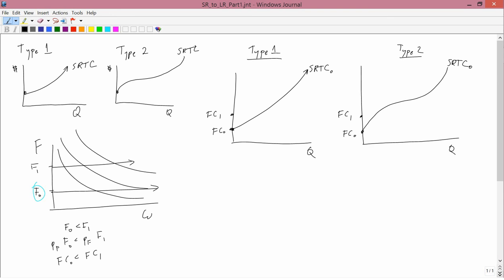What we don't know is how the rest of it is going to look. We know that type 1 is going to have an increasing and convex shape, so it might look like this, SRTC1. But it might, perhaps, look like this and cross so that SRTC1 would actually cross SRTC0.